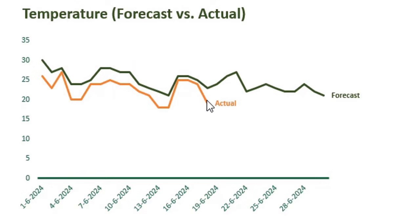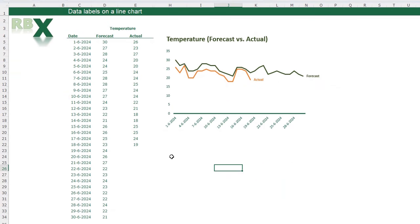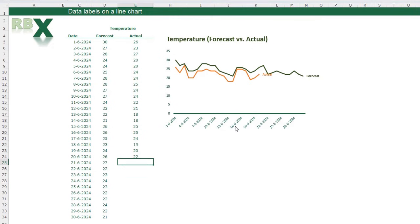This chart does not need a legend because there's a data label at the end of each line indicating what the line is for. In this example, there's an actual temperature and a forecasted temperature. I have a data table with dates, forecasted temperatures for the whole month, and actual temperatures until the 18th of June. When I add temperatures for the next dates, you can see the data label is actually moving with the line.